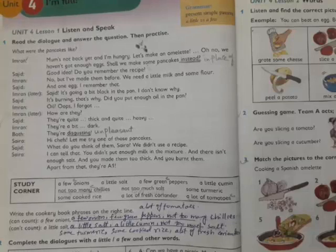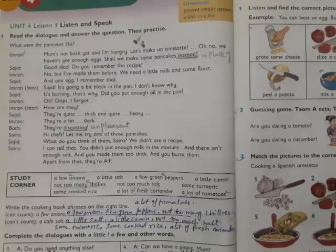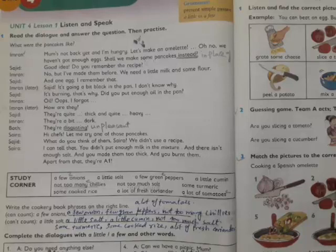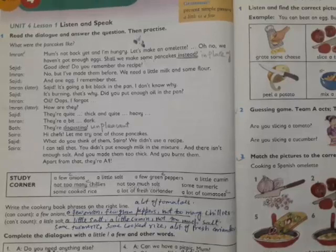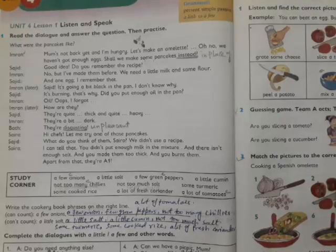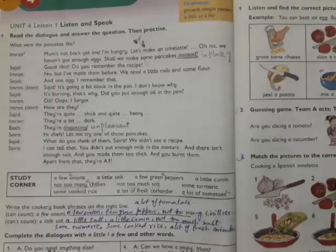I'm going to read the text first. Imran says mom's not back yet and I'm hungry, let's make an omelette. Sajid replies, oh no, we haven't got enough eggs, shall we make some pancakes instead? Sajid says good idea, do you remember the recipe? Imran says no, but I have made them before. We need a little milk and some flour, and one egg.